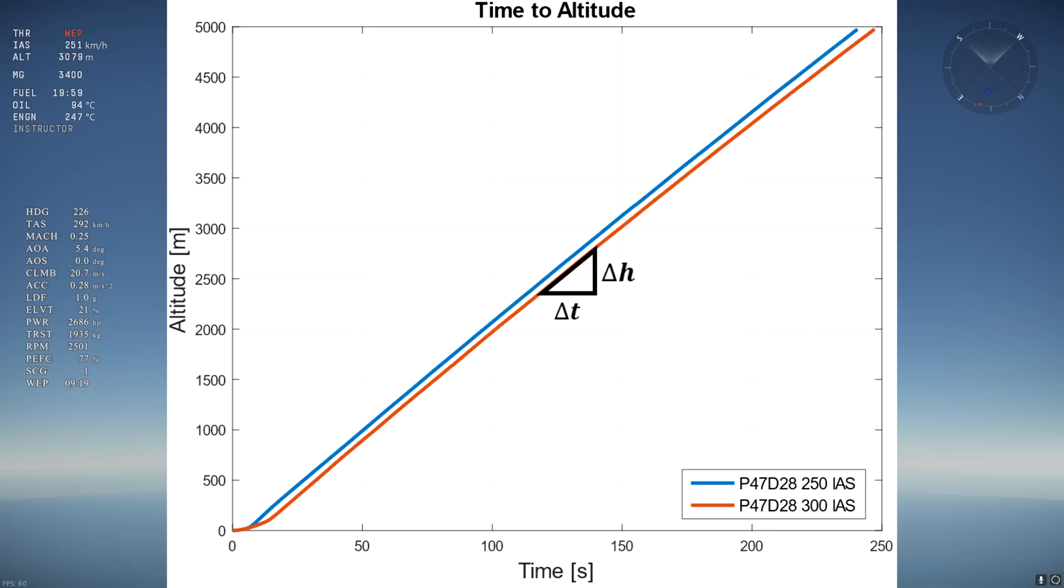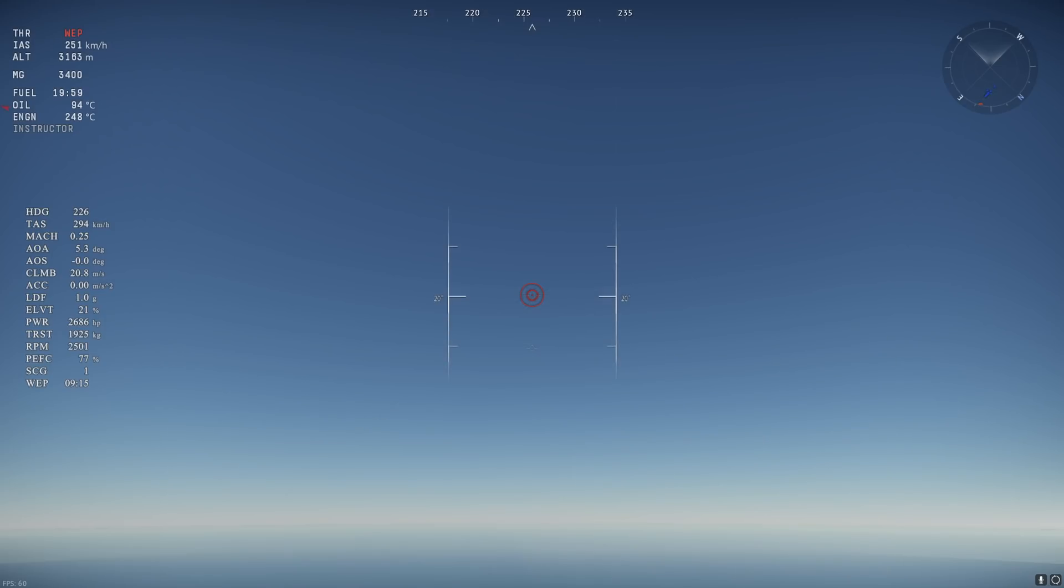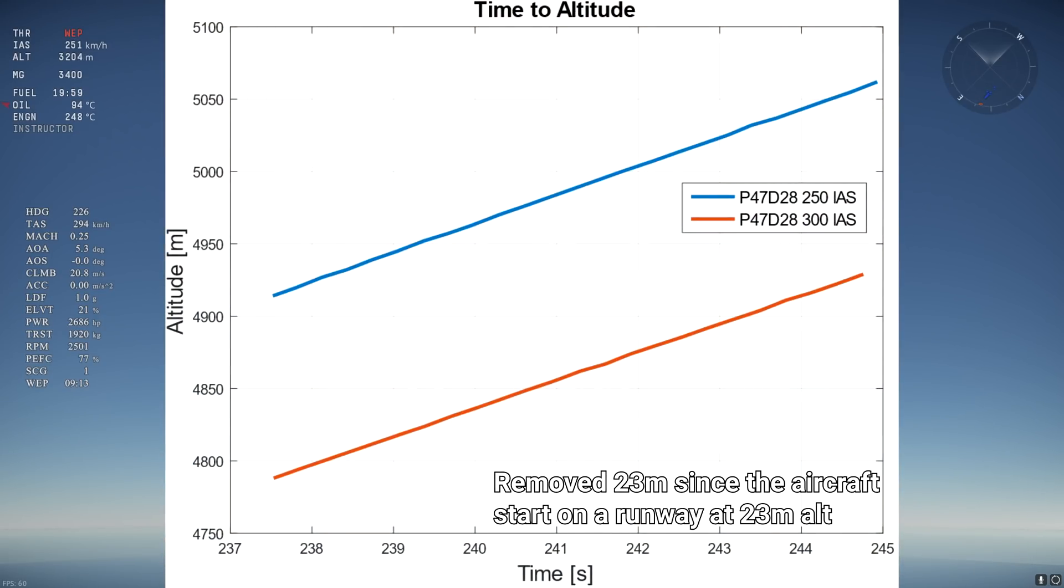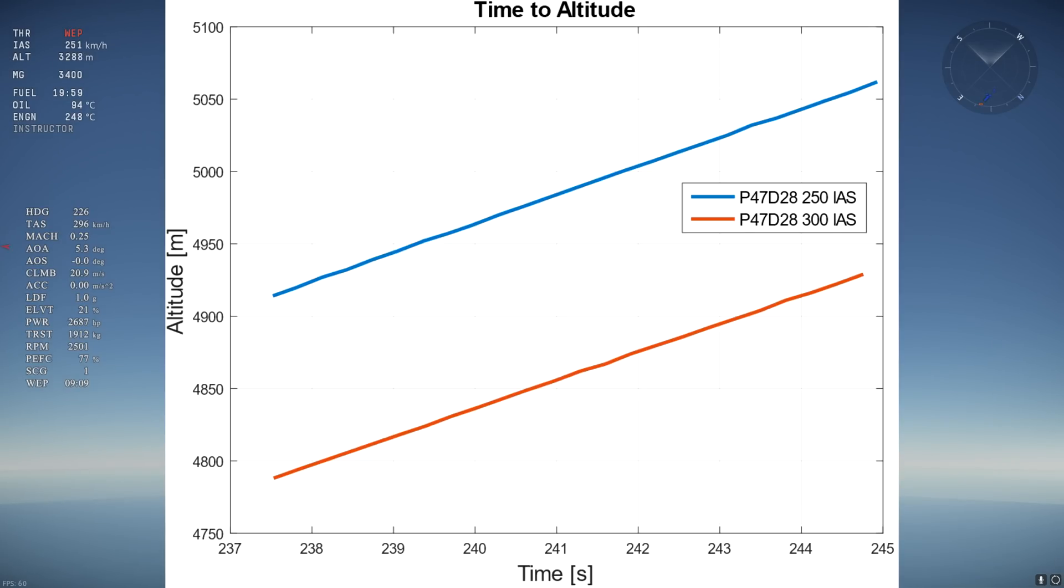As proof, let's compare the ending energies of both climb speeds after 240 seconds of climb. After 240.6 seconds, the 250 IES climb reaches 4,999 meters and 322 kmph, while the 300 IES climb reaches 4,873 meters and 387 kmph. So the 250 climb has a 126 meters of altitude lead.